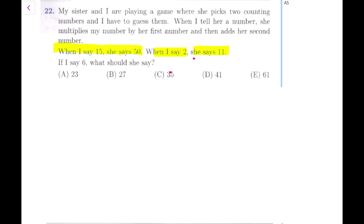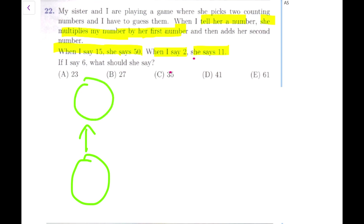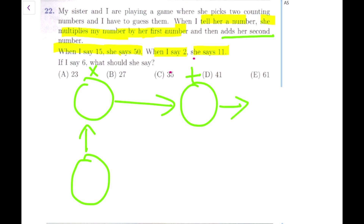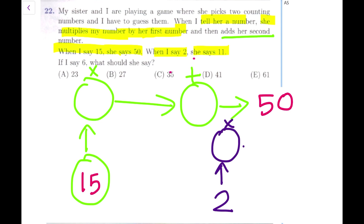Let's think about what is happening in this situation. I'm telling her a number, she's multiplying by a number, and then adding her second number, and then giving me the result. When I'm telling her 15, she multiplies with something, adds something, and gives me 50 - that's the first situation. In the second situation, I give her 2, she multiplies by the same number, adds the same number as before, and she tells me 11.